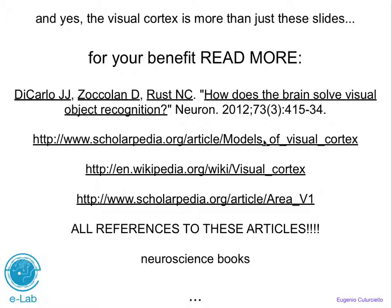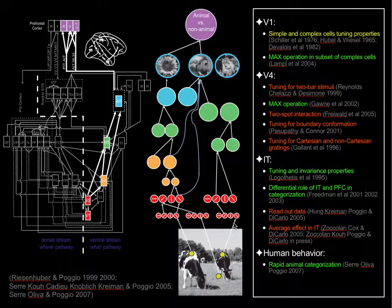There's also lots of information on the web, on Wikipedia, and in neuroscience books, though not all the latest findings are always reflected there. I really recommend reading many of these research articles. If you do, you will understand why areas like V1, V2, V4, and IT can give you a better model of visual processing.